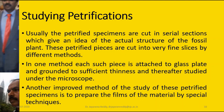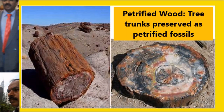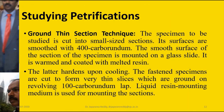Coming to petrification — you can take a thin section of the rock, and that section is studied under a microscope after staining. The section is also treated with acids and other chemicals. We have a wooden log here which is totally petrified. The transverse section is taken and you can see the internal structure — the vascular bundle and the annular rings. There are different techniques available.